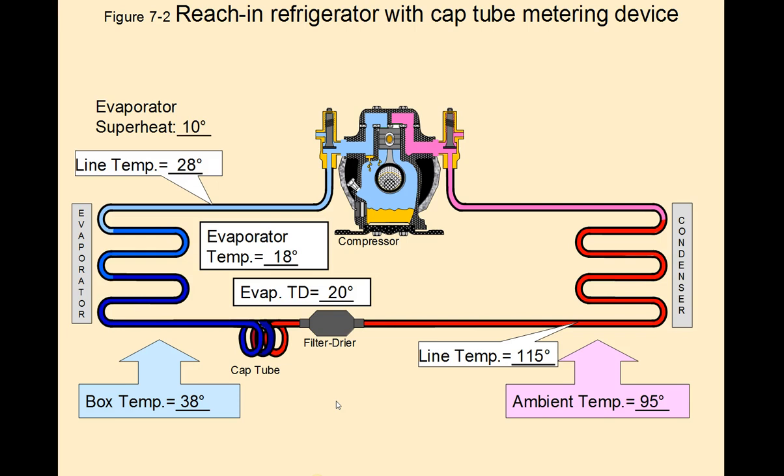And then again, the superheat is measured in the same manner as with a TXV. You're going to put your temperature probe here on the suction line at the outlet of the evaporator, and you measure 28 degrees Fahrenheit with an evaporator temperature of 18 degrees Fahrenheit. You subtract that from the 28, that gives you 10 degrees superheat.